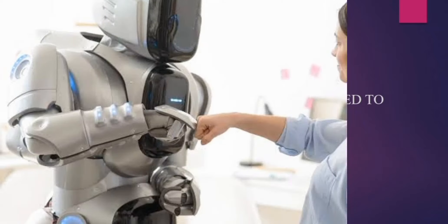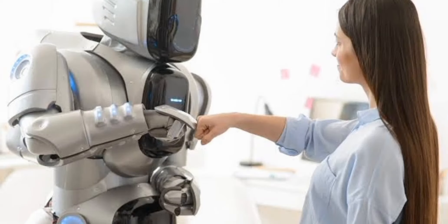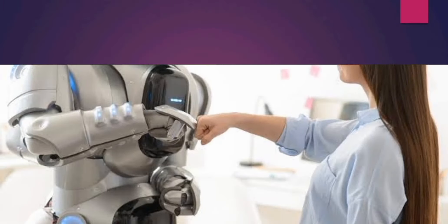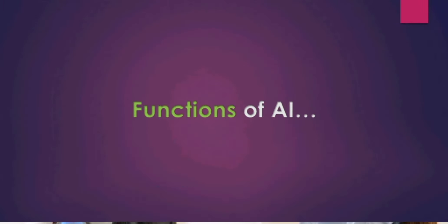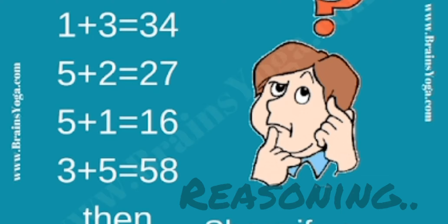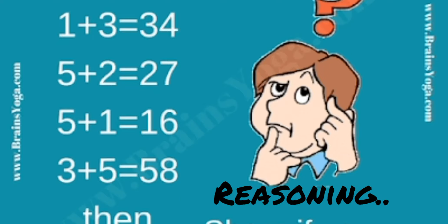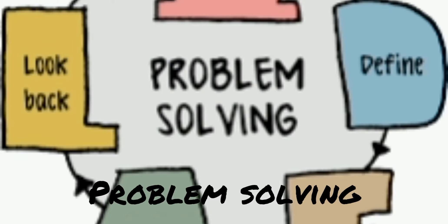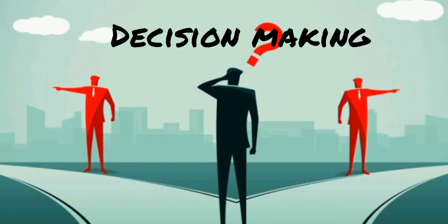We are trying to make a machine to function like a human being. Some of the functions an AI can perform are learning, reasoning, problem solving, and decision making.